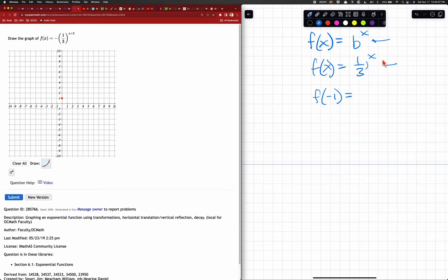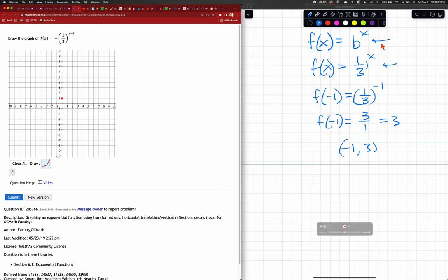So if I put negative 1 for x, I'll get that, which, of course, I hope we remember that that's equal to this. And that gives me another point, negative 1, comma 3. So I have a second point. So I can plot that second point, negative 1, comma 3.